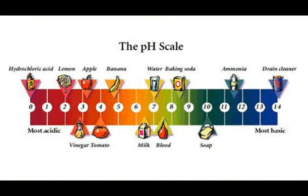From this universal indicator pH scale we can see that hydrochloric acid is most acidic while drain cleaner is most basic in nature. We can also see that milk is weakly acidic while blood is weakly basic.